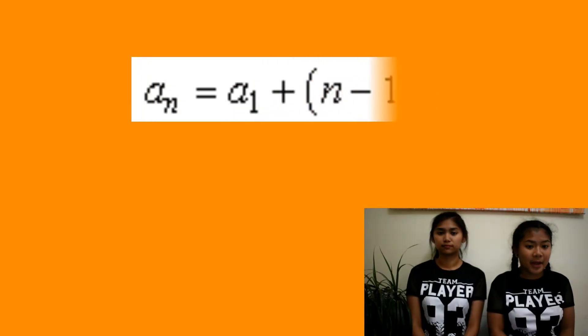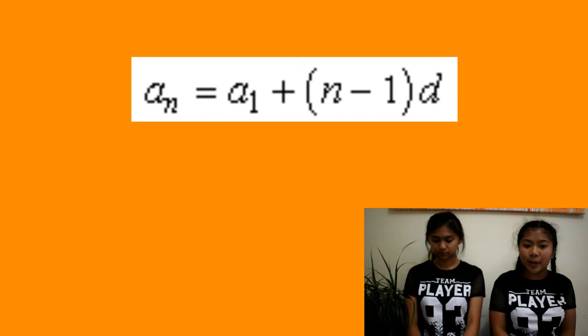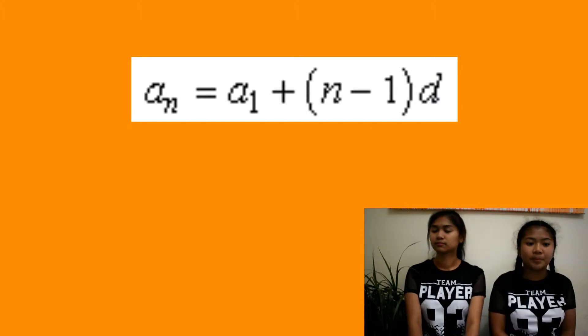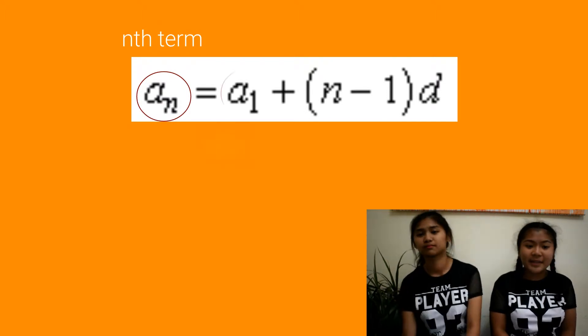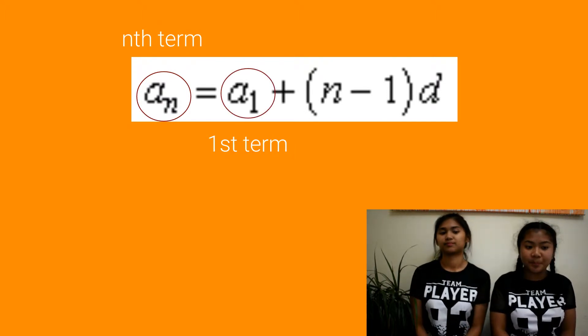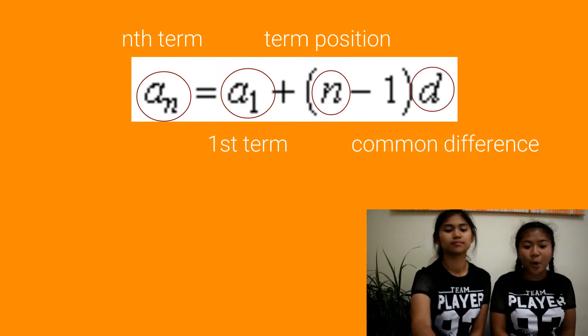And we're going to use this formula. A sub n is equals to A sub 1 plus quantity of n minus 1 multiplied by d. A sub n represents the n-th term. A sub 1 represents the first term. n represents the n-th term. And d represents the common difference.